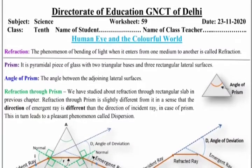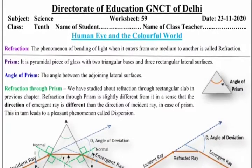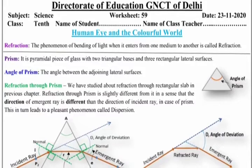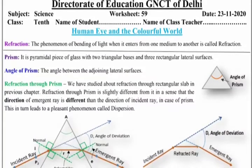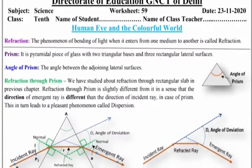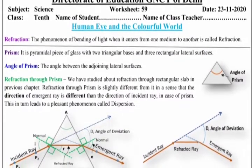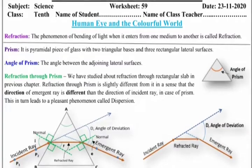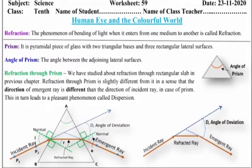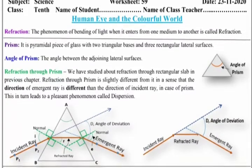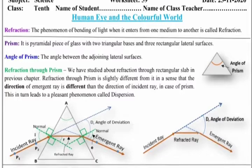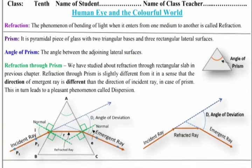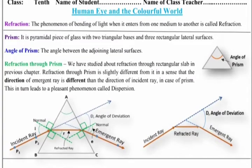We have studied refraction through a rectangular slab in the previous chapter. Refraction through a prism is slightly different — the direction of the emergent ray is different from the direction of the incident ray. This in turn leads to a phenomenon called dispersion.